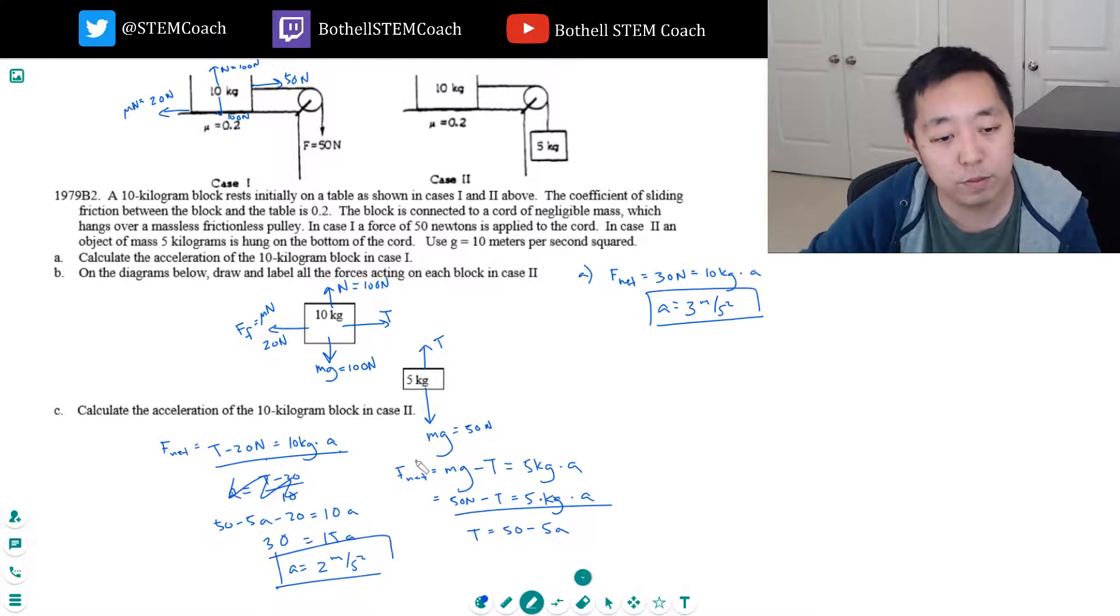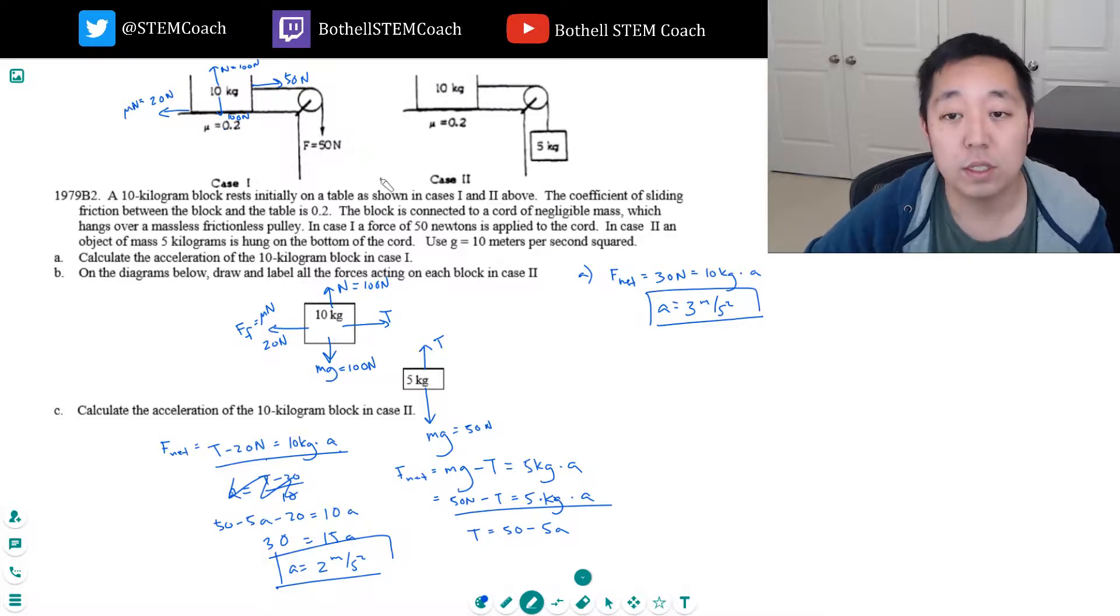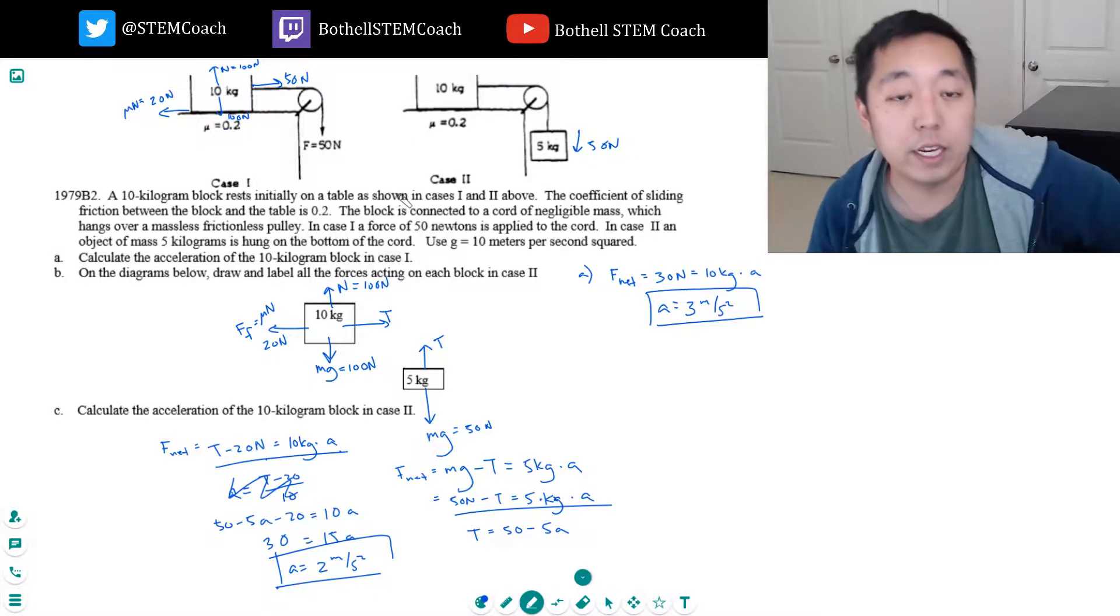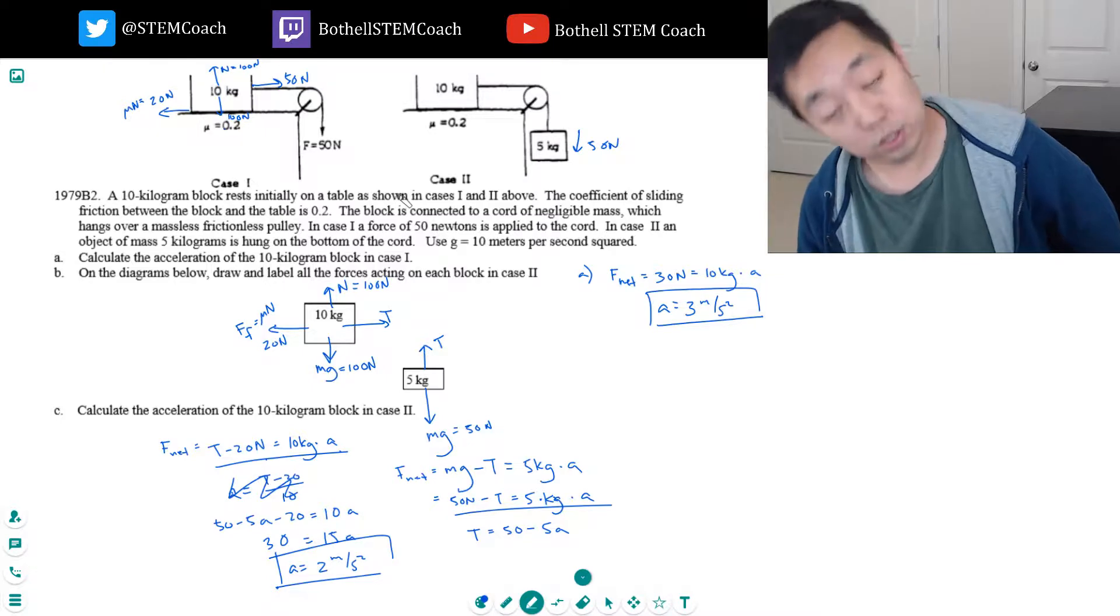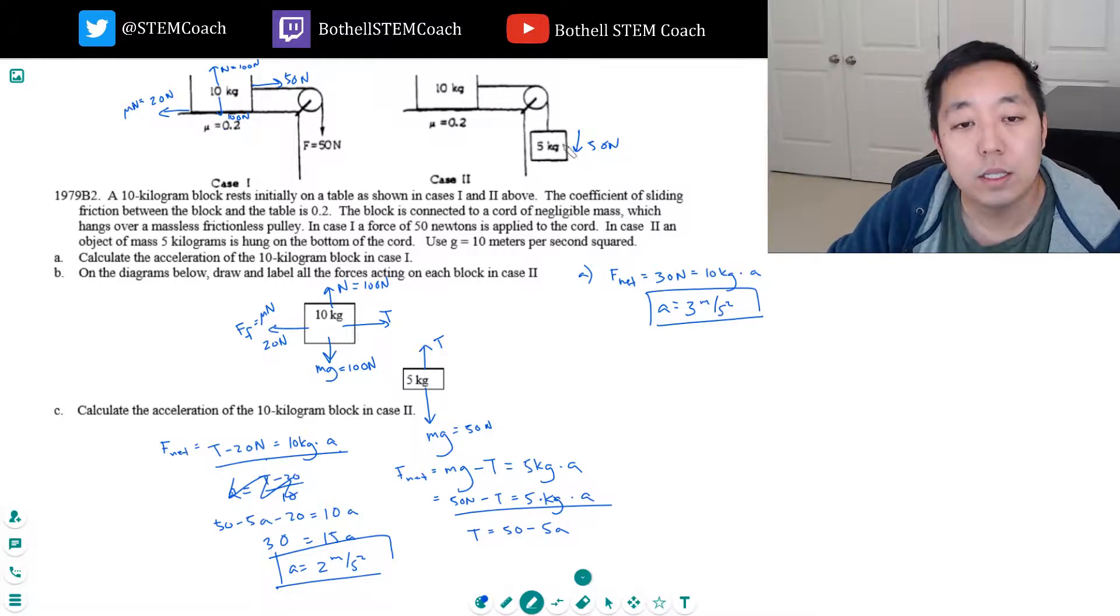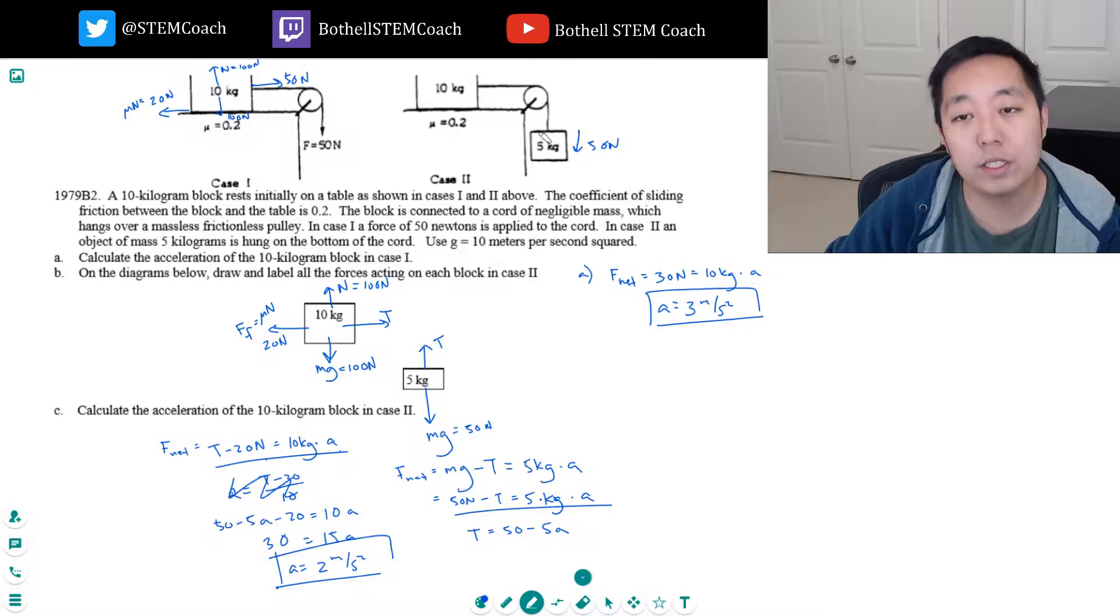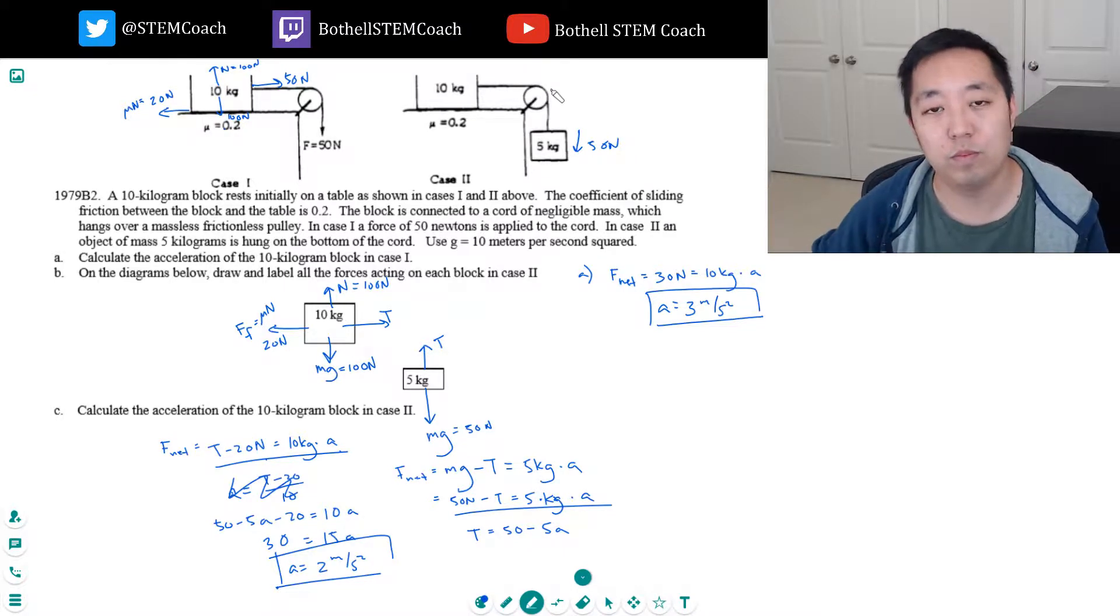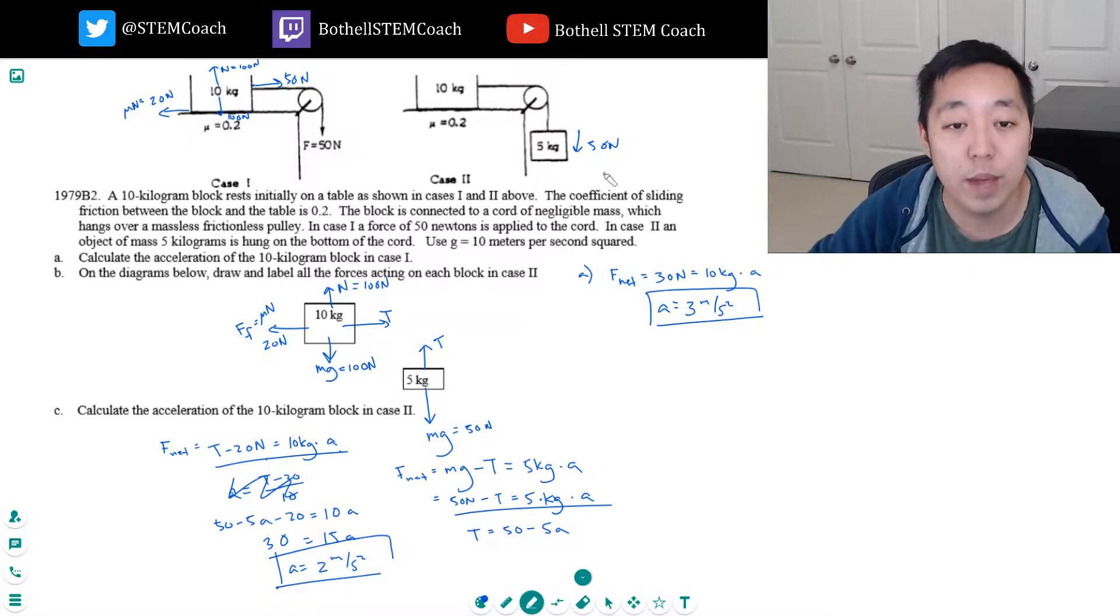Now why do we get a different answer? This is a key part. This is 50 newtons, isn't this doing 50 newtons also? Isn't it exerting the same force? Yes. But this mass requires some force to move this mass, right? It's not a massless thing. So what ends up happening is the tension is different.